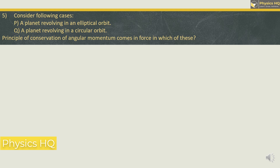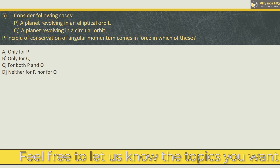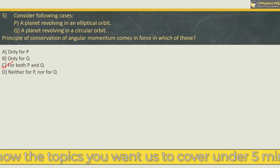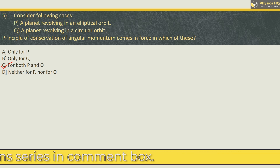The next question: consider the following cases — a planet revolving in an elliptical orbit, and a planet revolving in a circular orbit. The principle of conservation of angular momentum applies in which of these? The answer is that conservation of angular momentum applies to both a planet revolving in an elliptical orbit as well as a circular orbit.